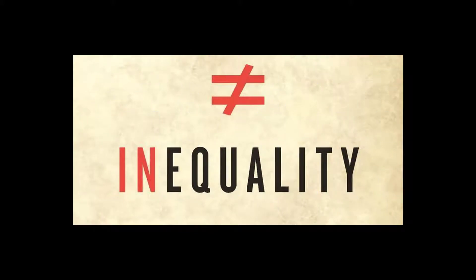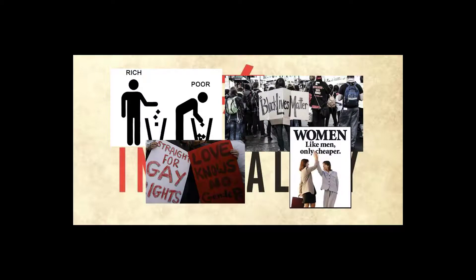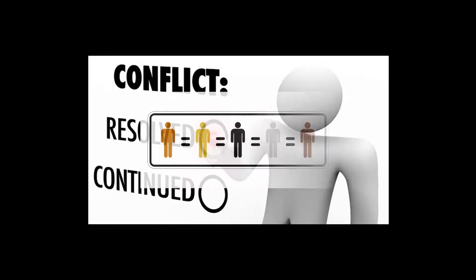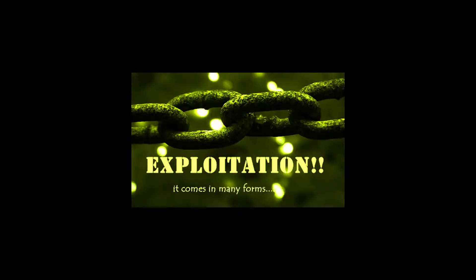Since conflict theory views conflict as caused by inequality, it predicts areas of inequality in a society will be sites of conflict, which is what we find. Inequality exists in terms of economic class, race, gender, and sexual orientation, and each of those areas is a site of significant social conflict. It is important to recognize that conflict theory does not approve of conflict. The goal is to reduce conflict by reducing inequality. Greater fairness equals less conflict. Poverty and inequality are not functional — they are a result of exploitation and domination by those with wealth and power.